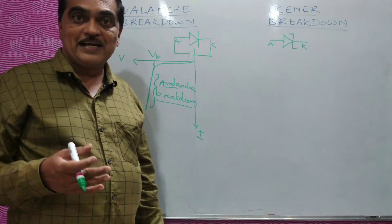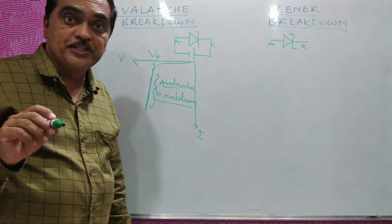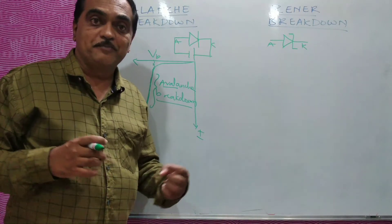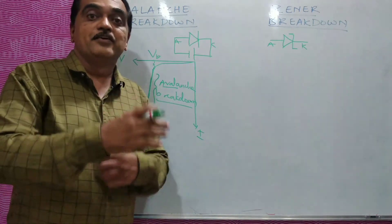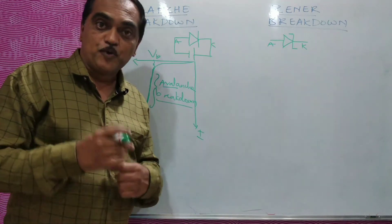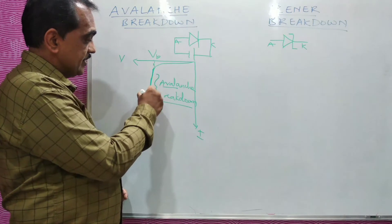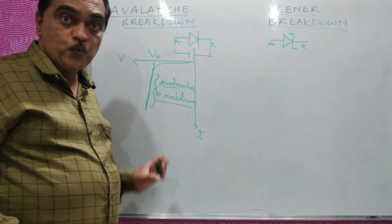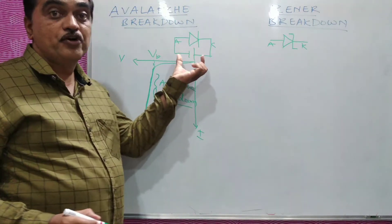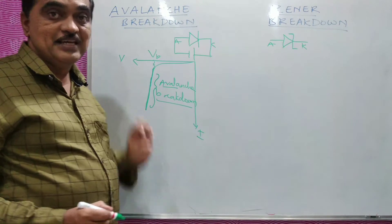And because of that, the current will go on increasing. There is a collision effect — the kinetic energy will create a collision effect, and because of this, many free charge carriers are produced. There is a drastic increase in the reverse current, which can further produce more heat and can destroy the device itself. This is what we see in avalanche breakdown.